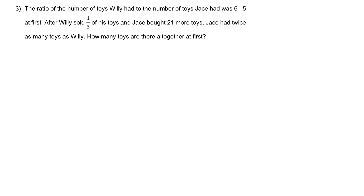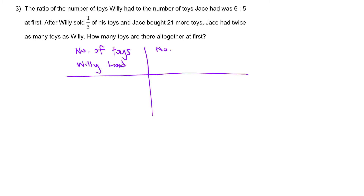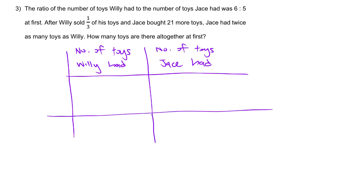We are going to set up the ratio table. We have the number of toys Wheelie had to the number of toys Jase had, with a before and after column. At the beginning, the ratio is 6 is to 5. Hence, we have 6 units to 5 units.